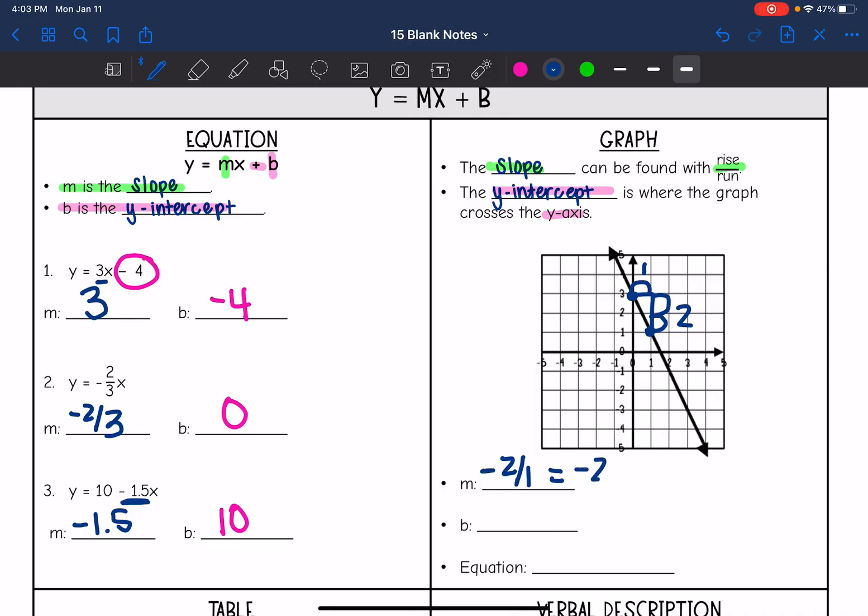And then the y intercept is where we cross the y axis at 3. So our equation is y equals negative 2x plus 3.